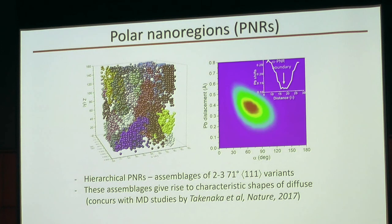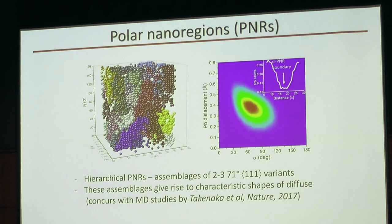We started to look at what happens within these individual clusters, which we can call polar nanoregions. We found a clear correlation that better the alignment — smaller the angle — larger the displacements. The other thing which was clear is that the transition from one PNR to another was very smooth — a gradual change in displacement magnitude along the boundary. Again, there was no disordered matrix; everything was continuous, just smooth transitions.